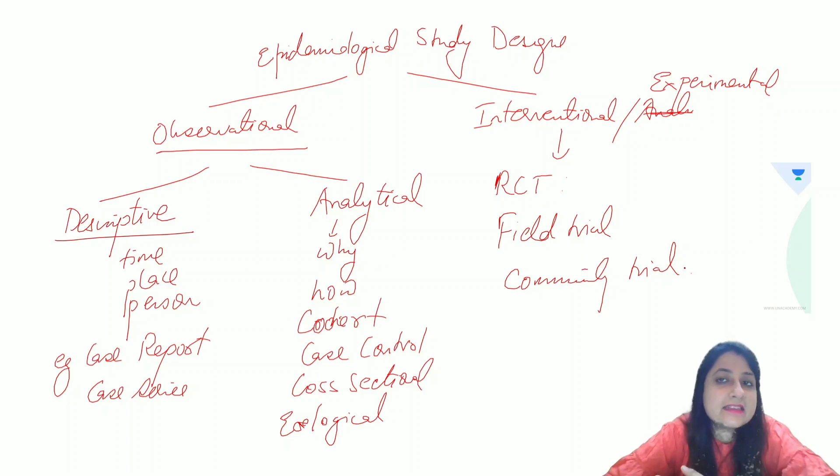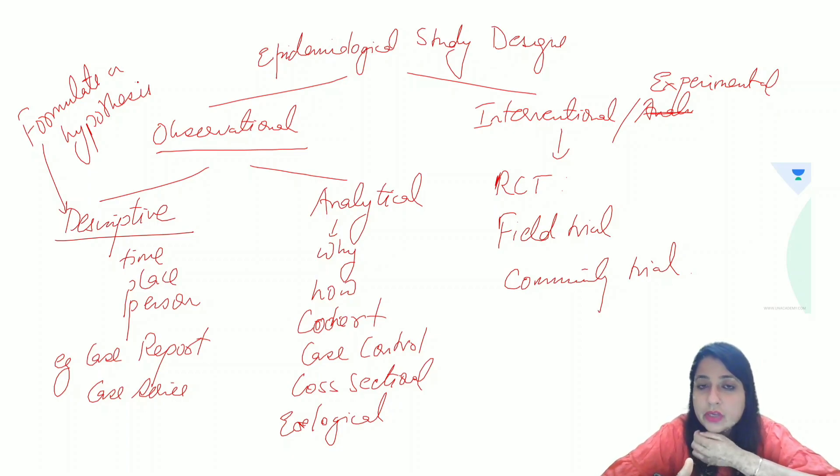So the real question is, why are these study designs being done? So descriptive study design always helps us formulate a hypothesis. Formulate means whenever a new disease happens, nothing is known about the disease. It's a new occurrence. So we are first going to describe it. Like when COVID happened in 2019, we didn't know it was COVID. We were calling it as pneumonia of unknown origin. So it was first described that there's a certain disease which is occurring during winter months in Wuhan, China affecting the male population working in the bird market. So that is descriptive.